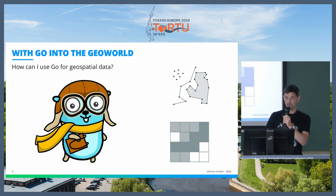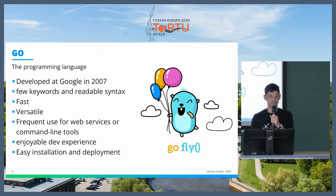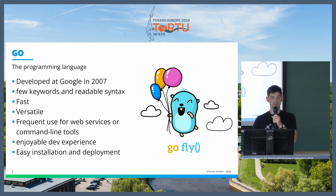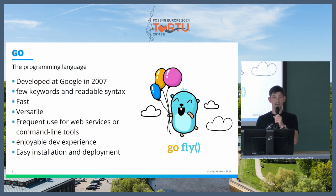I made a list of which libraries exist, which I will show you later. But first, a short introduction of what Go actually is. It's a programming language developed by Google in 2007, so it's quite old already, but it got popular a bit later. It has quite readable syntax with only very few keywords. It's quite fast and versatile, but it feels a bit like Python when you program it — very easy to read. It's most often used either for web services, providing an API, or for command line tools.